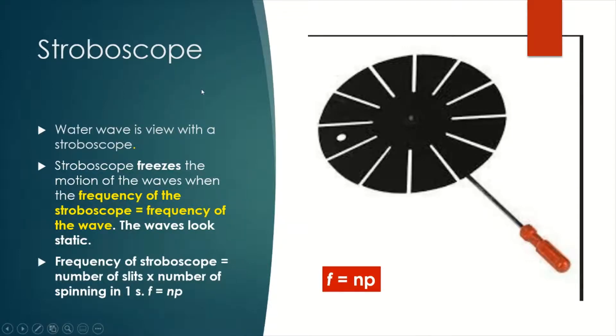Water wave continues to move forward. So how are we going to measure the wavelength? In order to measure the wavelength easily, we use this device called stroboscope.